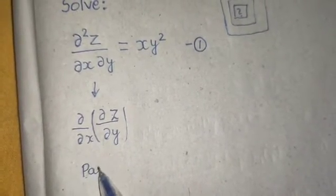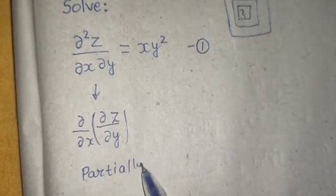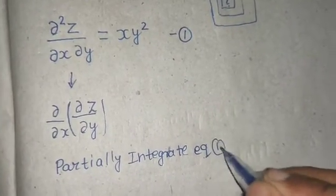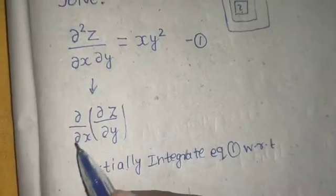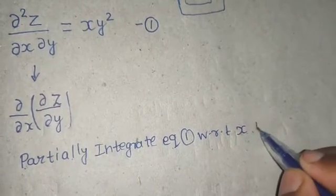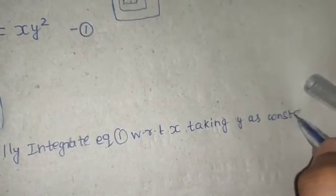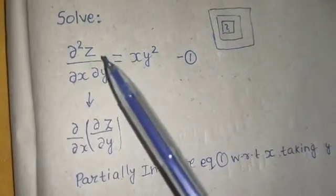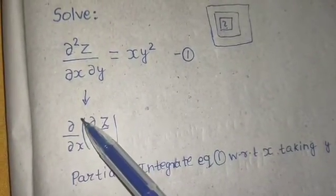What we will do is partially integrate equation number one with respect to X first, because the outer covering is X. When integrating with respect to X, Y is to be treated as constant.